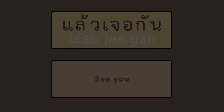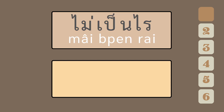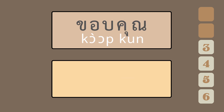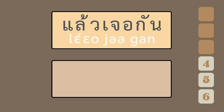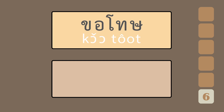Now, let's do the quiz. What is สบายดี? — To be fine. What is ไม่เป็นไร? — That's okay. What is ขอบคุณ? — Thank you. What is แล้วเจอกัน? — See you. What is สวัสดี? — Hello, bye. What is ขอโทษ? — Sorry.